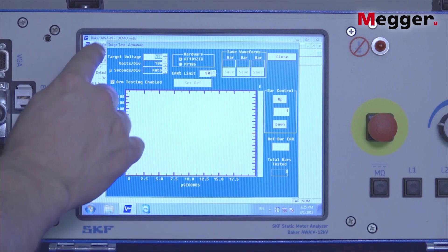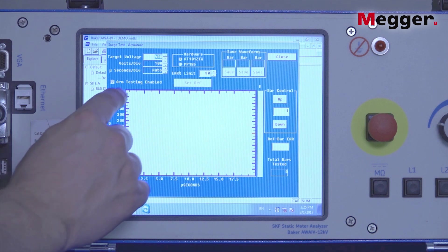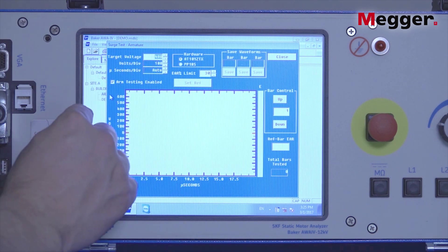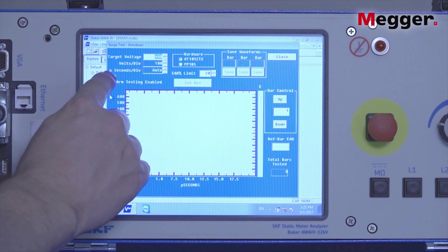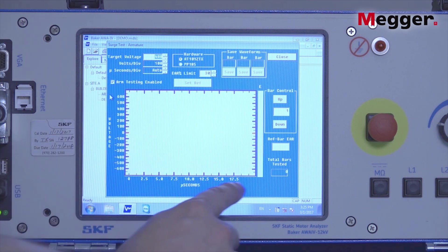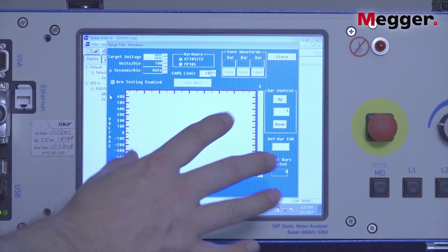That'll change the screen to the armature test screen. Select the appropriate target voltage, in this case 400. Set your volts per division and your microseconds per division as desired for the circuit under test.